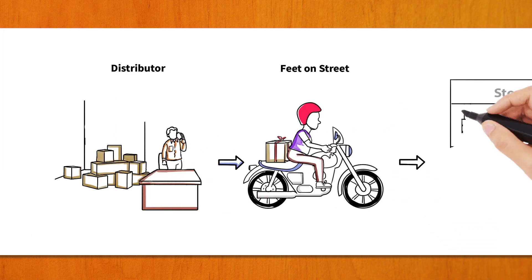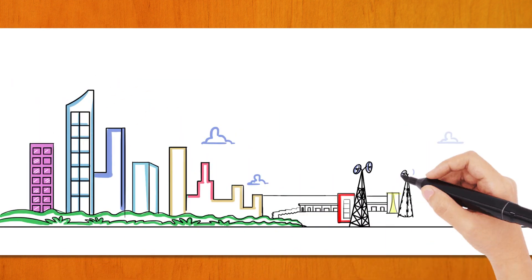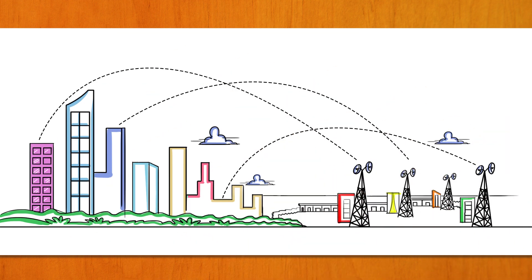Every distributor receives talk time from telecom companies, which they sell further as prepaid recharges to retailers. Every distributor gets an area in the range of three towers, which approximately covers 450 to 500 retailers.